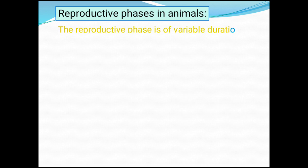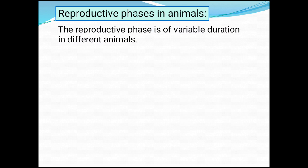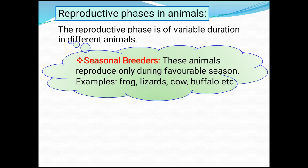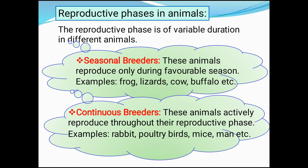Let us see reproductive phases in animals. The reproductive phase is of variable duration in different animals, and based on that they are classified into two types. The first one is seasonal breeders — they reproduce only during a favorable season. Examples: frog, lizards, cow, buffalo, etc. The second one is continuous breeders — these animals actively reproduce throughout their reproductive phase. Examples: rabbit, poultry birds, mice, man, etc.